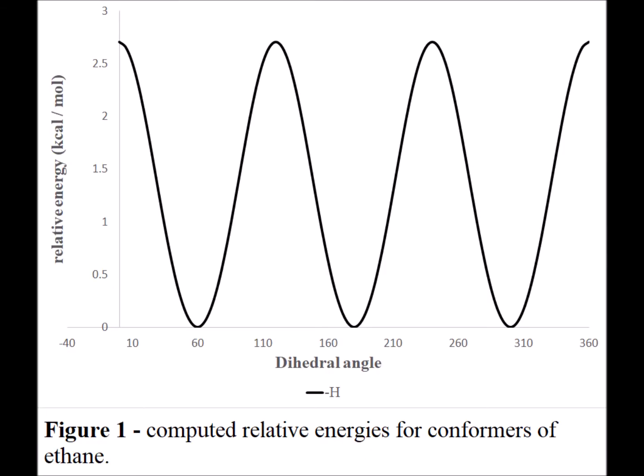The difference in energy between the minima and the maxima is approximately 2.7 kcal per mole, and this difference is usually attributed to steric hindrance and electrostatic repulsion of the front hydrogen atoms with the back hydrogen atoms.